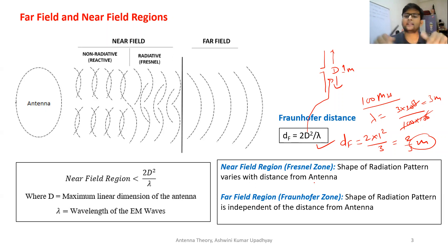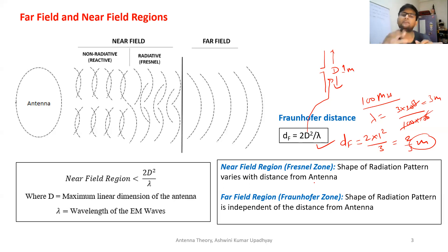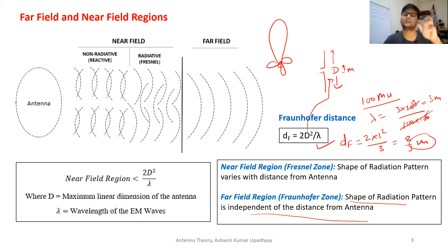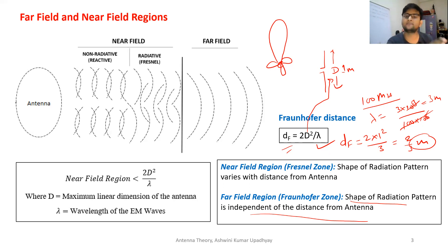In the near field region, electromagnetic waves behave very differently. The shape of the radiation pattern varies with distance from the antenna, and any obstacle inside this near field region will also affect the shape of the electromagnetic radiation. So whenever we talk about radiation pattern, gain, or directivity, we always talk about the far field region, because in the far field region the shape of the radiation pattern is independent of distance. The distance beyond 2D²/λ is called the far field or Fraunhofer region.